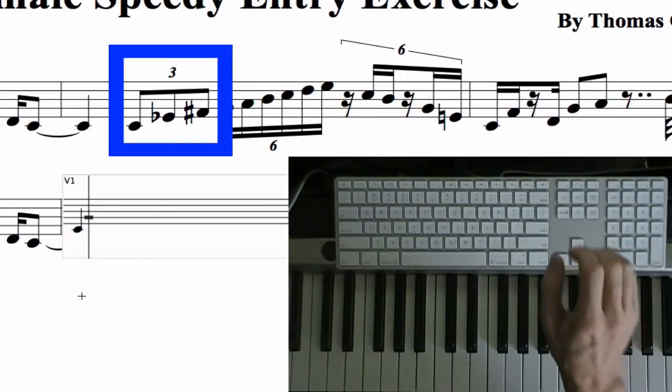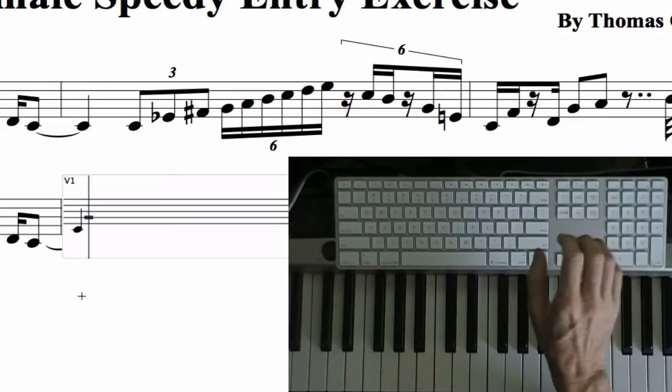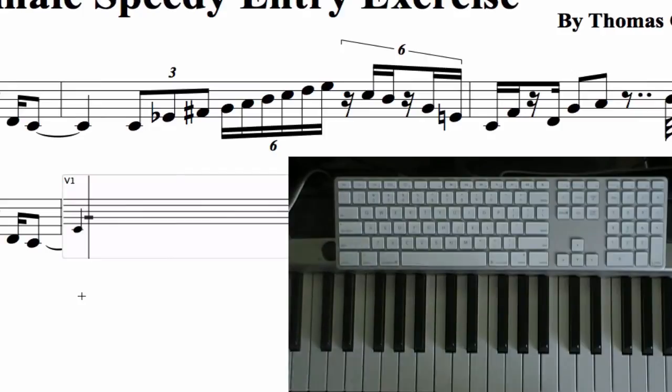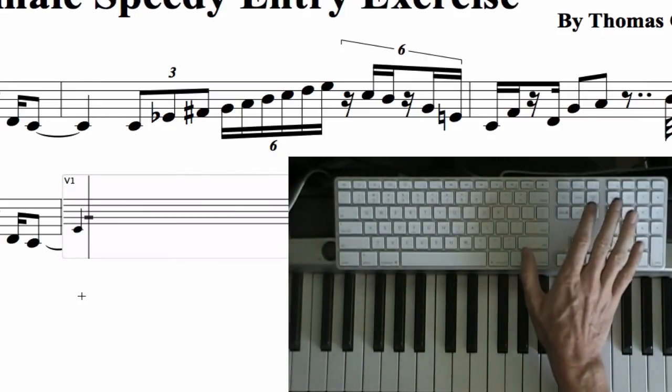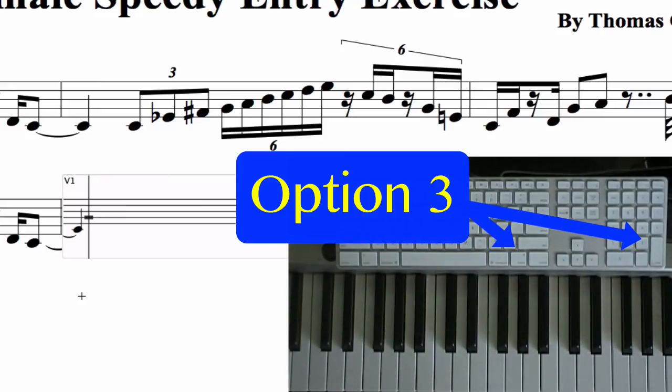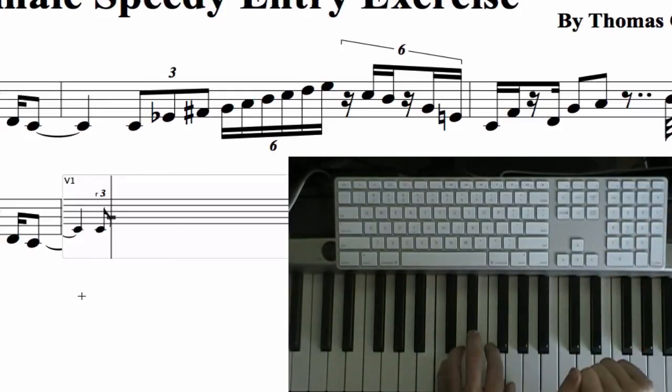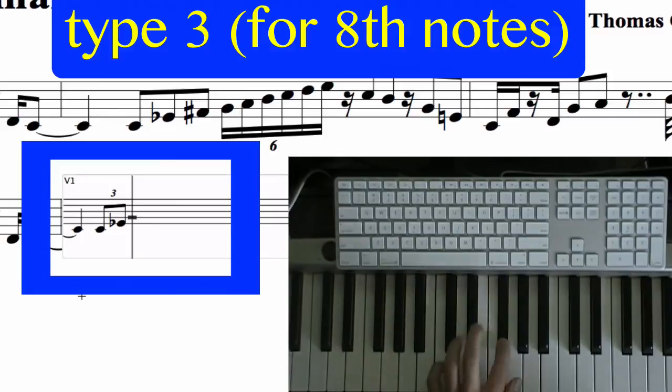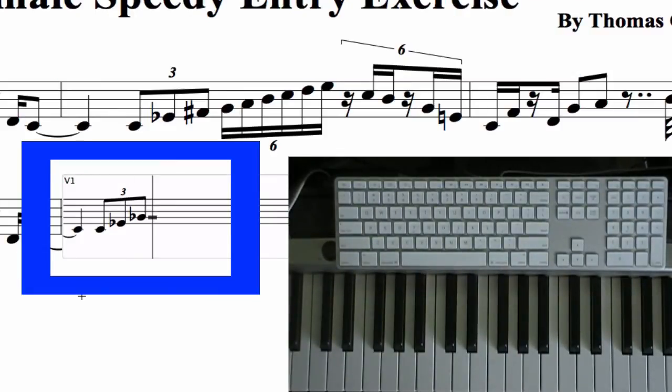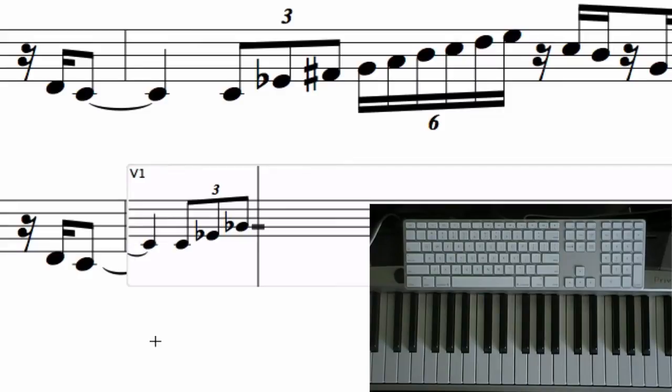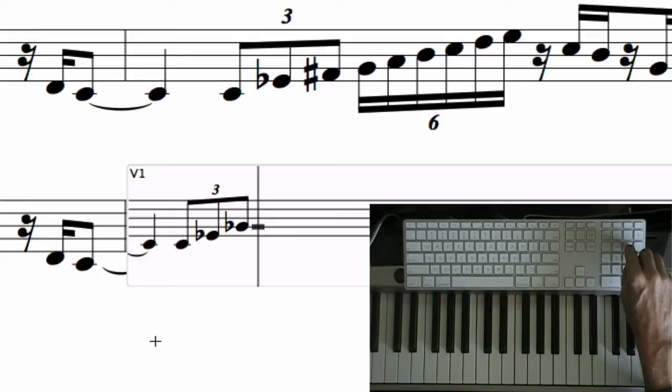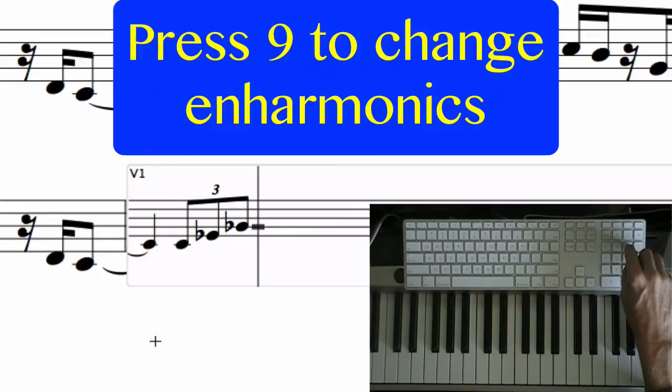In order to put in the three eighth note triplets, we need to first tell Finale that we want to put in triplets. We do this by holding option and typing three. Now enter the three triplets as if they were regular eighth notes. In my example, Finale used the wrong enharmonic for the G flat. What I really want is an F sharp. I can simply switch the G flat to an F sharp by pressing the 9 key.